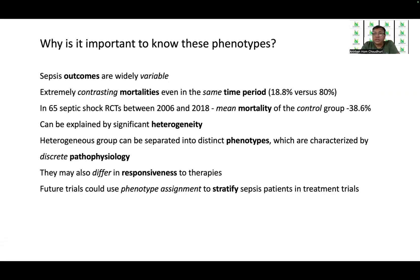Why is it important to know these phenotypes? Because even without our knowledge of phenotypes, it is clear that sepsis outcomes are widely variable — variable from place to place, time to time, situation to situation, circumstances to circumstances. Extreme contrasting mortalities have been observed within the same time period, that is between the 1980s to 2010, where mortalities varied in large multi-centric RCTs between 18% to as high as 80%. And in 65 septic shock RCTs between 2006 and 2018, the mean mortality of the control group was relatively the same, in the order of 38.6%. But despite that, there has been a very wide mortality in sepsis patients. This can only be explained by significant heterogeneity, and the heterogeneous group can be separated into these phenotypes, with their distinct pathophysiology being understood in a much better way.